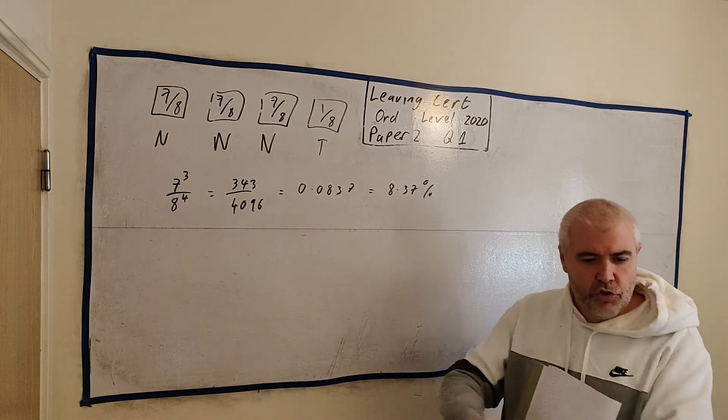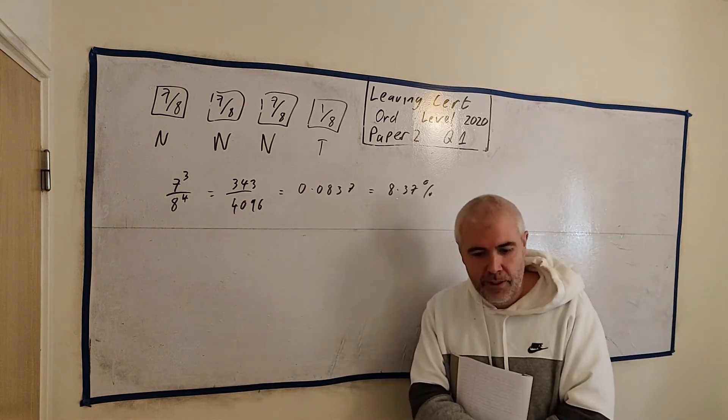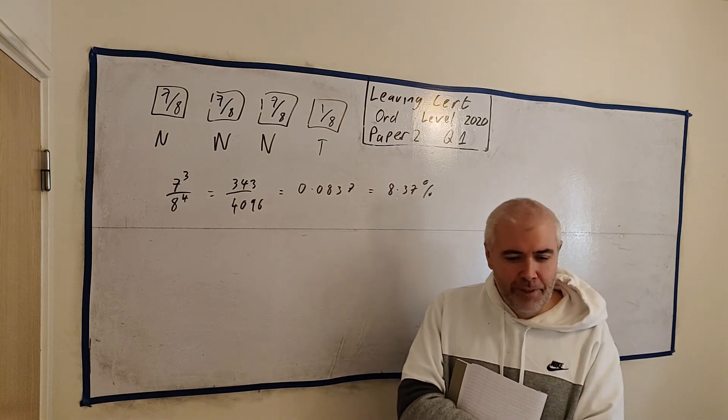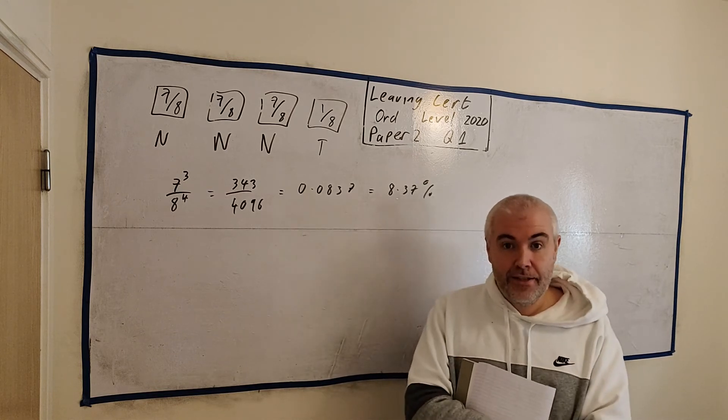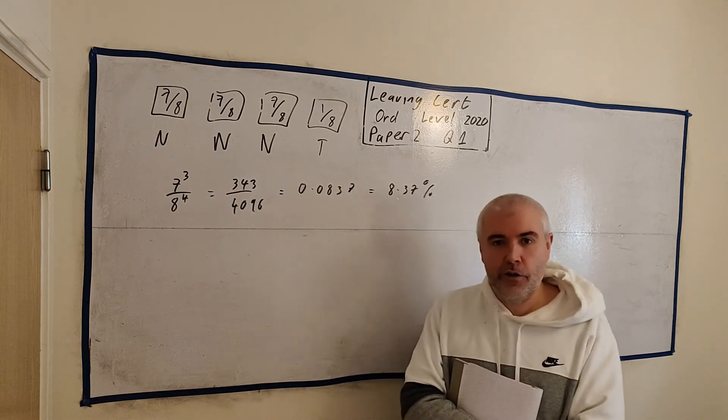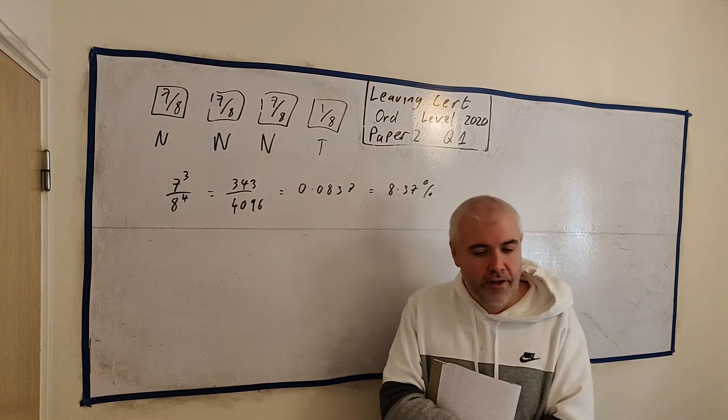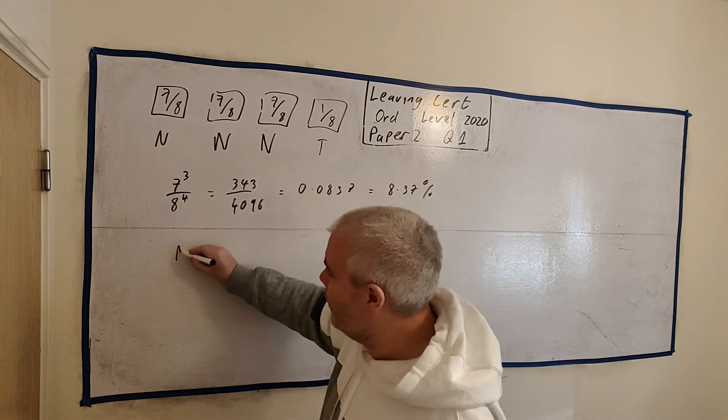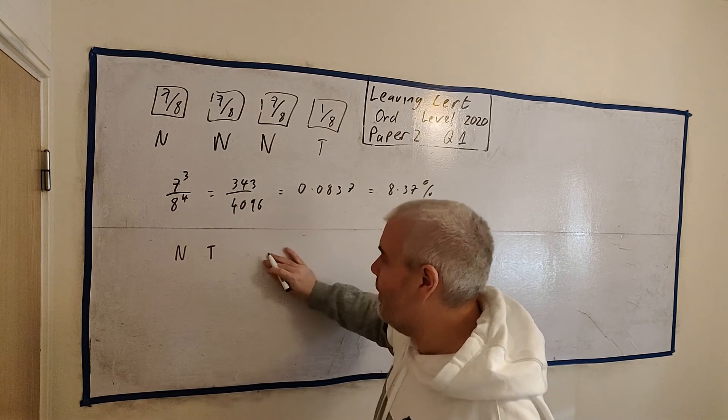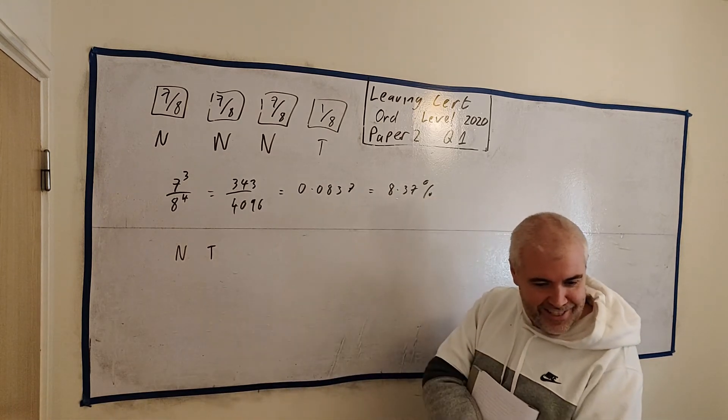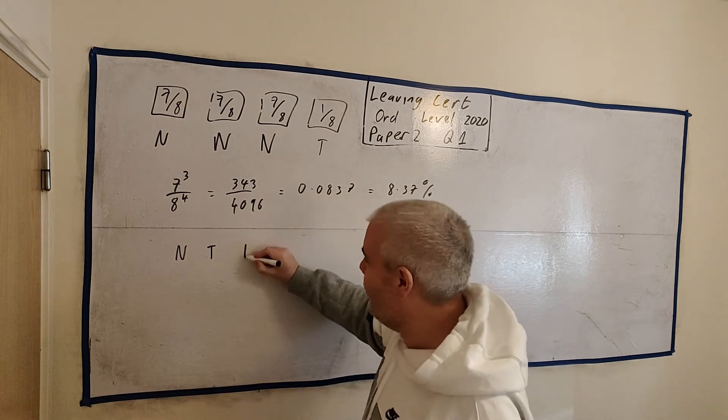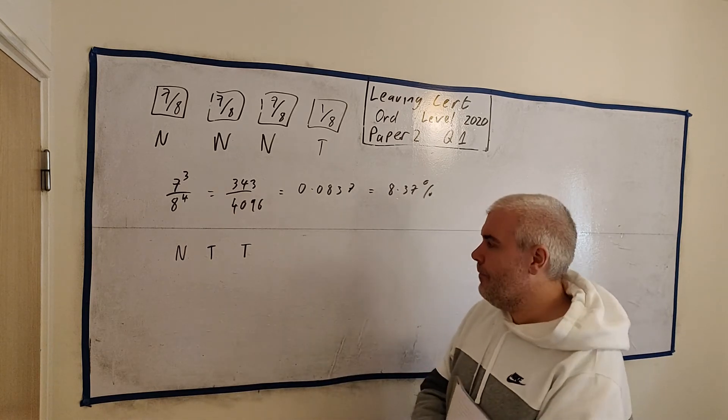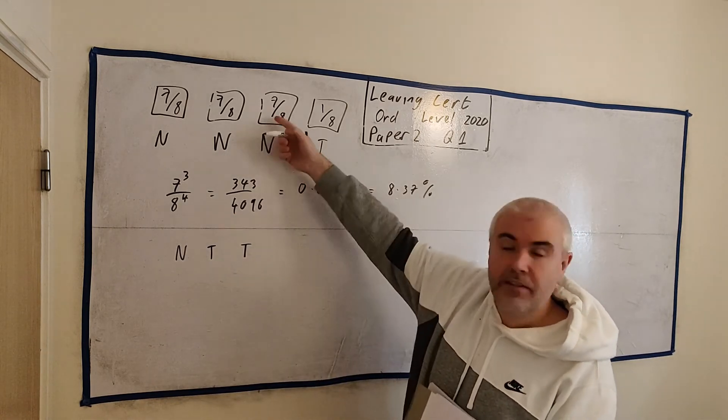And the very last part then. They say 3 people are chosen at random from the population. What's the probability that exactly 2 of them play tennis? Now this is a much harder question. It doesn't seem much different, but it's much harder. And I'll try and explain why. Because here's an example. How about I pick the first person and they don't play tennis, second person they play tennis. Let me read the question. 2 play tennis. And the 3rd person plays tennis. So this is what they asked for. Exactly 2 people play tennis.